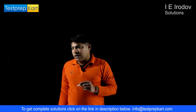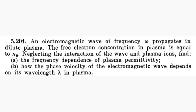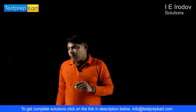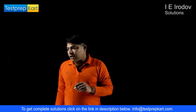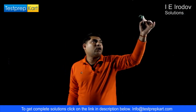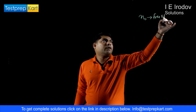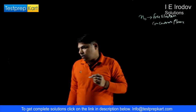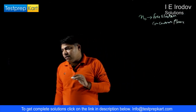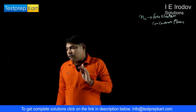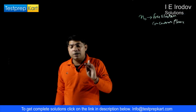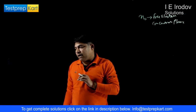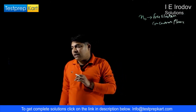Question number 5.201. An electromagnetic wave of frequency omega propagates in dilute plasma. The free electron concentration in plasma is N0. Neglecting the interaction of wave and plasma ions, first find the frequency dependence of plasma permittivity, and second, find how the phase velocity of the electromagnetic wave depends on its wavelength lambda in the plasma.